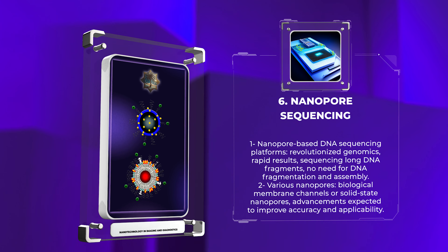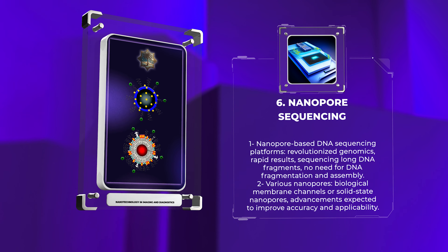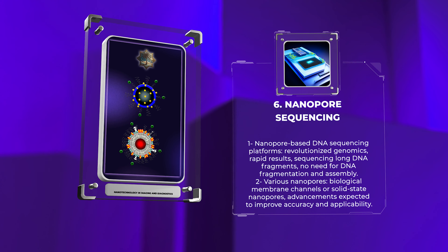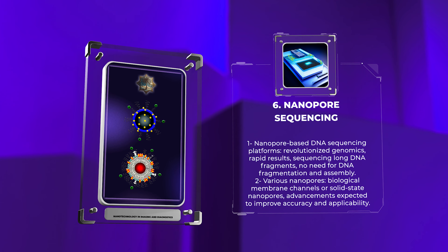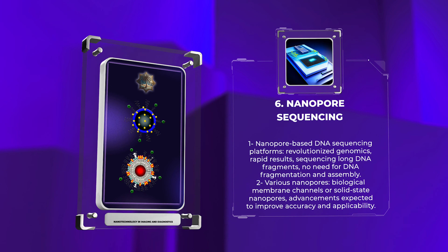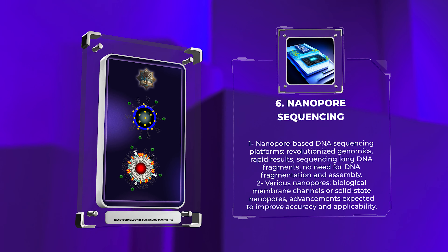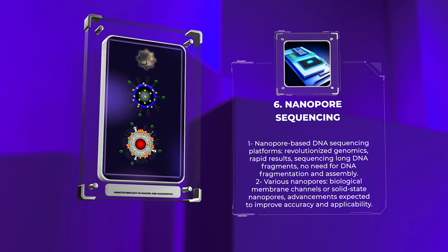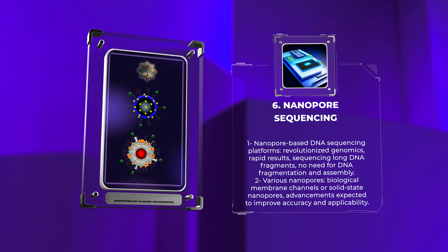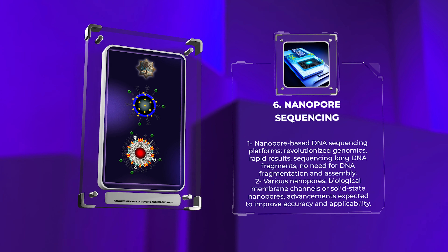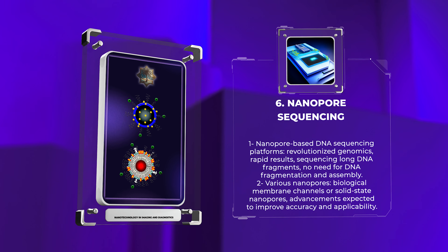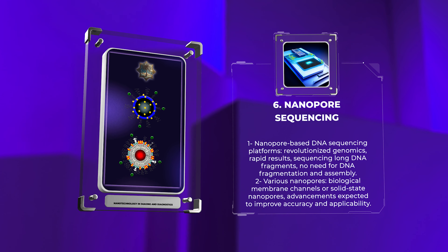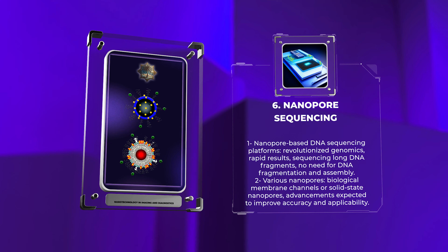Nanotechnology has revolutionized genomics through the development of nanopore-based DNA sequencing platforms. In nanopore sequencing, DNA molecules are passed through a nanoscale pore and changes in electrical current or ionic flow are monitored to enable real-time DNA sequencing. This technique offers advantages like rapid results, sequencing long DNA fragments, and eliminating the need for DNA fragmentation and assembly. Nanopore sequencing platforms use various nanopores, such as biological membrane channels or solid-state nanopores made from materials like silicon nitride or graphene. Advancements in nanopore technology are expected to improve accuracy and enhance its applicability in medical research and diagnostics.